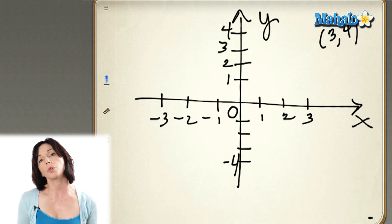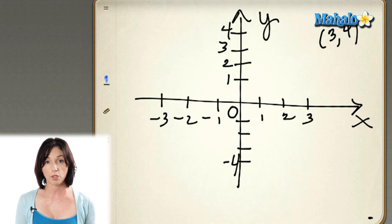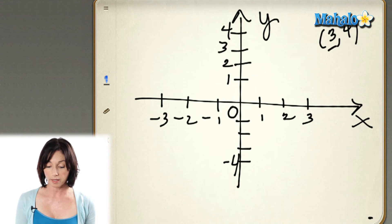So you'll see a coordinate point, something like this 3, 4. And the first thing you do is you move 3 in x. So we'll start at the origin, and we move to 3 in x.